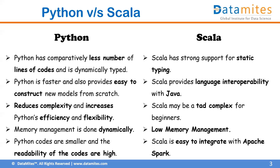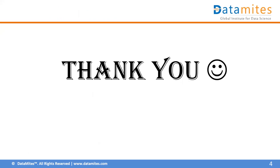Scala is easy to integrate with Apache Spark, which is a useful tool for handling big data and developing machine learning models. In Python, the code is typically smaller and the readability of the code is very high. These are the key points that differentiate Python and Scala. That's it for today, thank you.